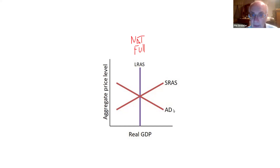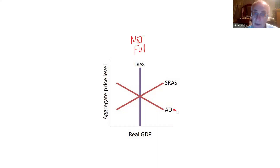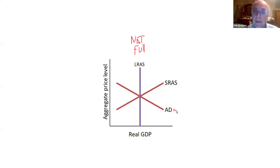AD shifters are consumption, investment, government spending, and net exports. Interest rates come up a lot in monetary policy. Lower interest rates increase consumption and investment — AD right. Higher interest rates decrease consumption and investment because people do not want to borrow — AD left.